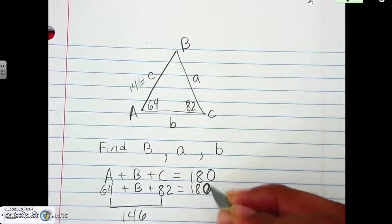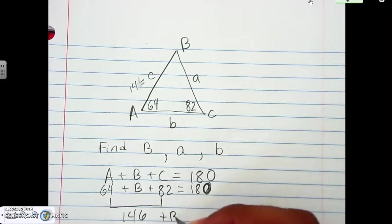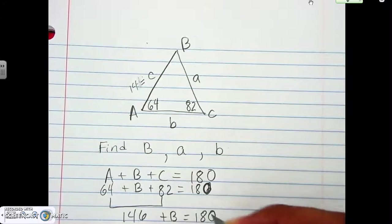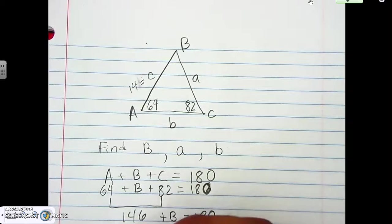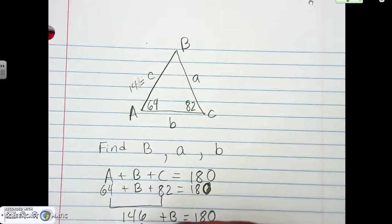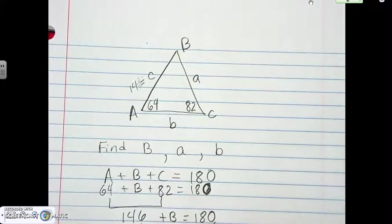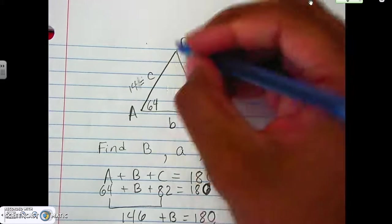this gives us 146. That's 180, not 161, 180. So it means here, if we subtract 146 on both sides, we get what? 34, right? 34 degrees. So that's our angle B. So now we have all three angles. Let's go ahead and fill that in, 34.